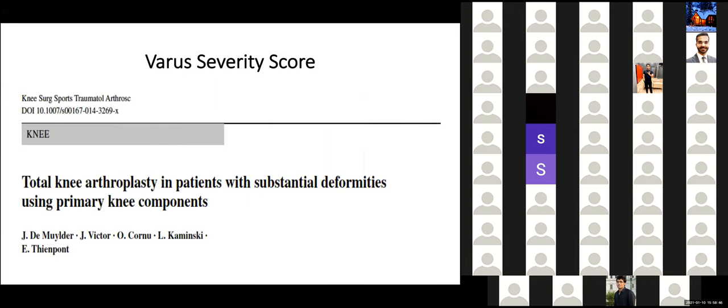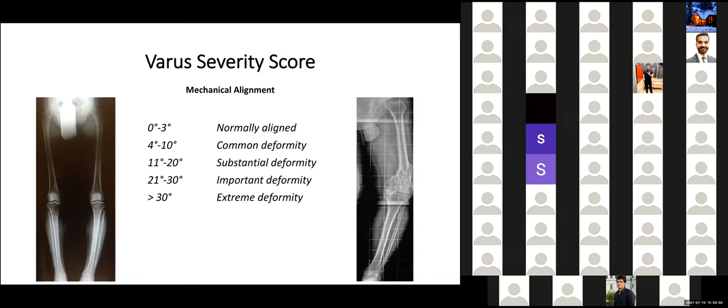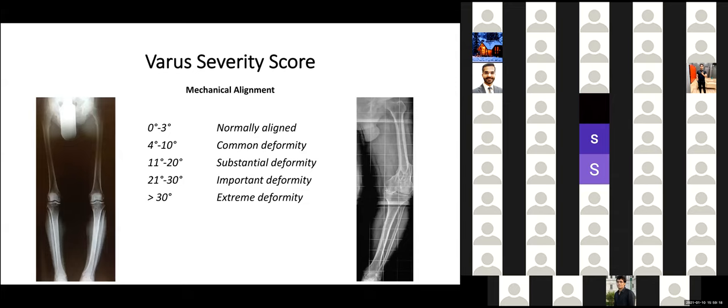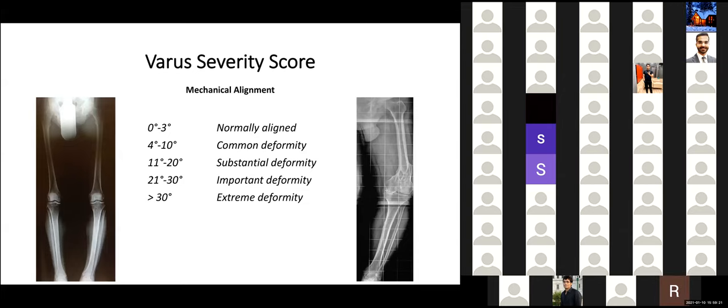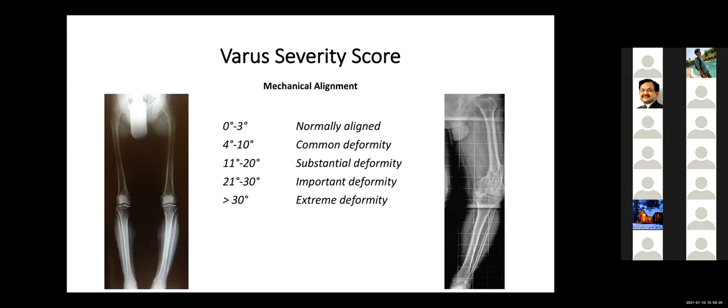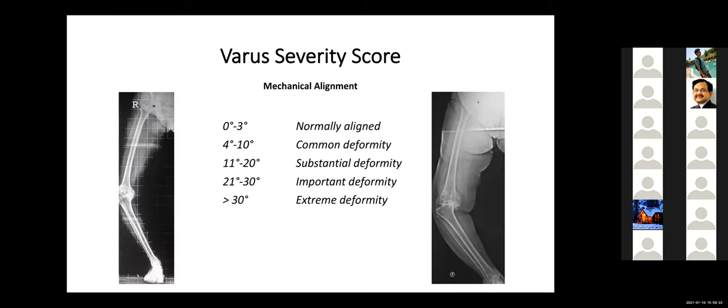I want to go through a little bit of work that we have done, and I will focus on the varus knee because the previous speaker talked eloquently about the valgus knee. The first paper we published many years ago was about the type of substantial deformities that patients can have. And I was seeing that often when we use wording, we never know exactly what we are talking about. So we developed a simple score where you would have 0 to 3 normally aligned, 4 to 10 a common deformity. This is without any difficulties, 11 to 20 would be substantial, 21 to 30 would be an important deformity, and more than 30 degrees would be extreme deformity. And you see here on the right, a picture I got at the time from Arun.